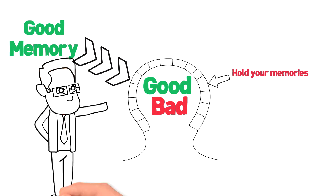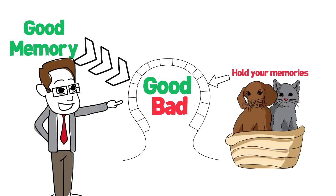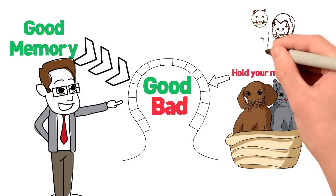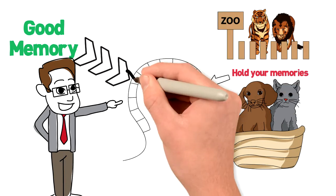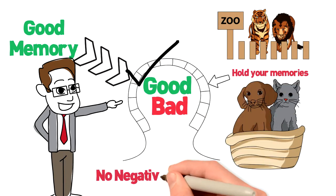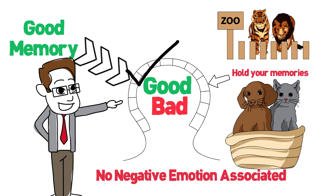Dog and cat are filed here under pets, tigers and lions under zoo, and so on. These memories are easily filed if there is no negative emotion associated with it.